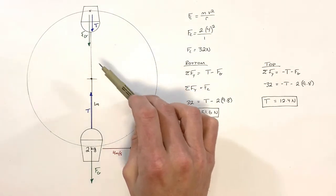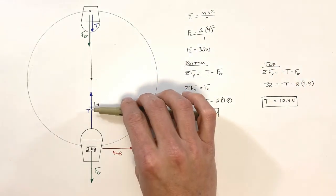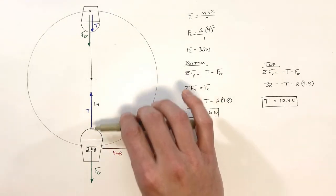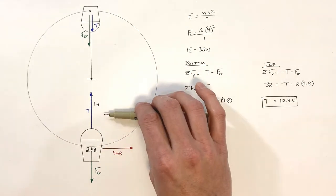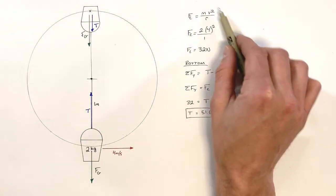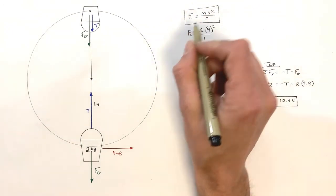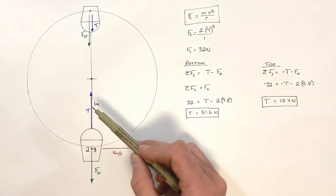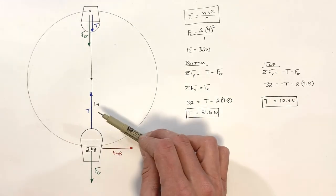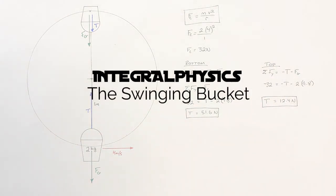The big takeaway is that centripetal force is not its own separate force, and it's not necessarily equal to just one of the forces present. When we have competing forces like this, we have to be sensitive to the situation and can't blindly plug into the centripetal force equation. We have to carefully apply this in the context of our understanding of net force.